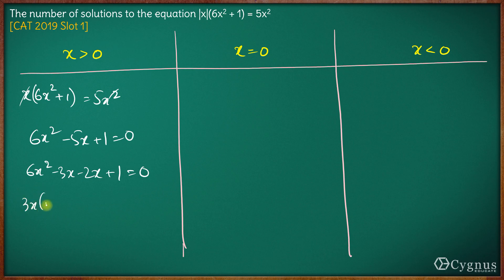So we have 3x common here, (x minus 1), (2x minus 1). We take minus common from these two. So we have (2x - 1)(3x - 1) equals 0.